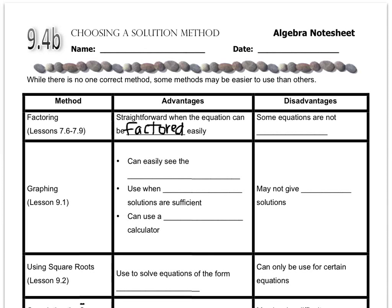A disadvantage is that some equations are not factorable. So just because you can't factor it right away doesn't mean that it is factorable. It could be something that's not factorable and you're wasting your time.